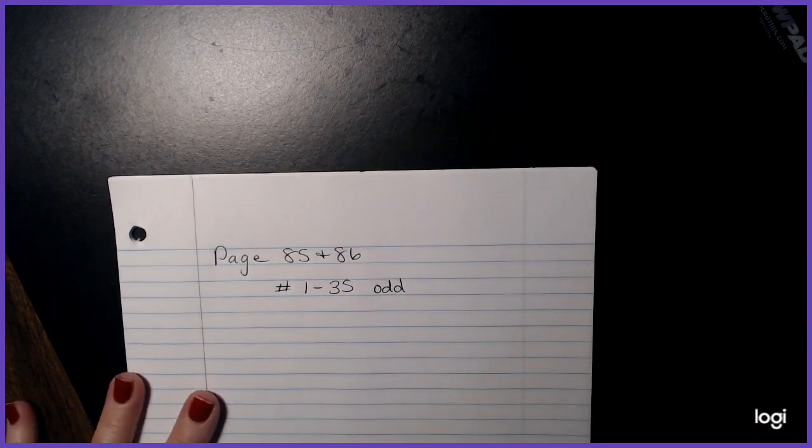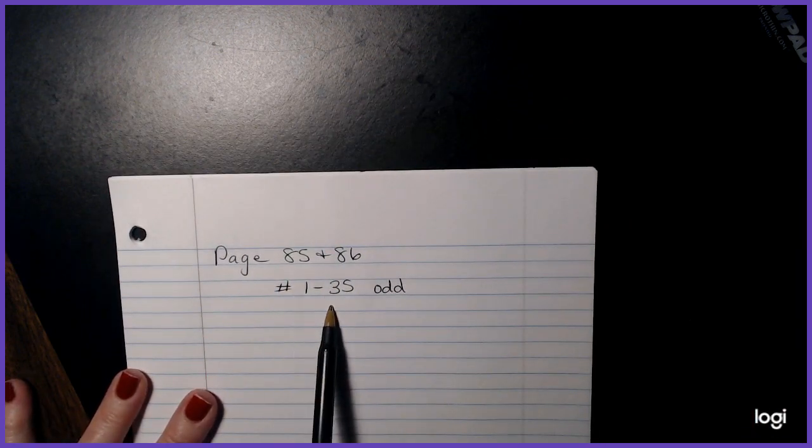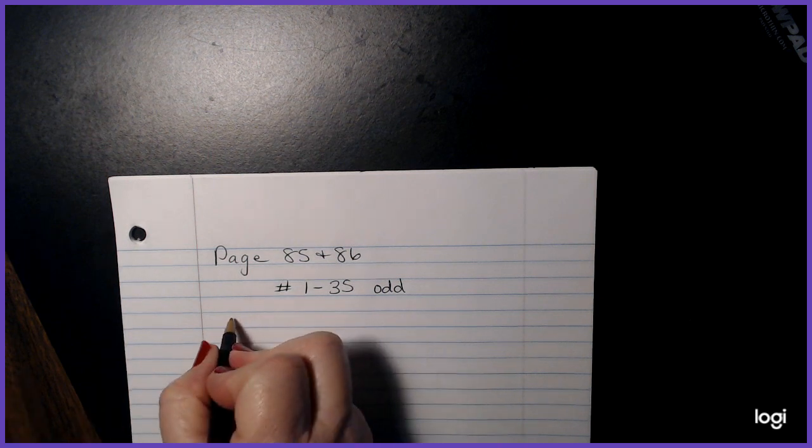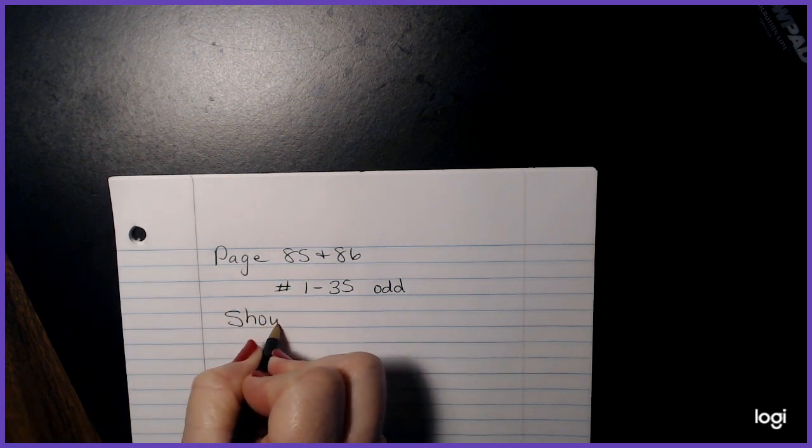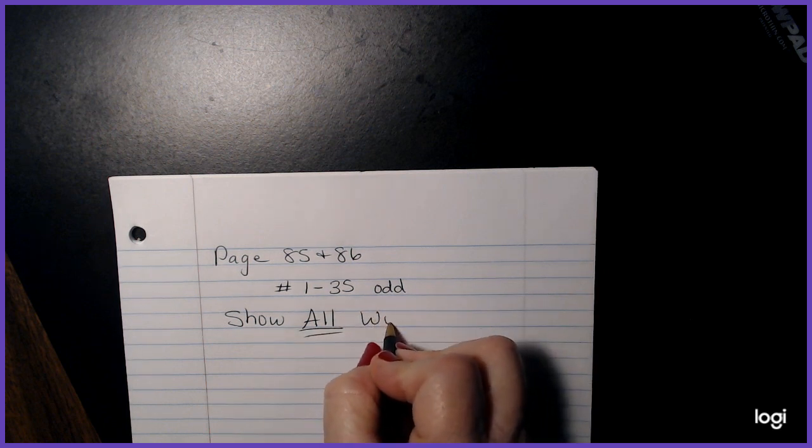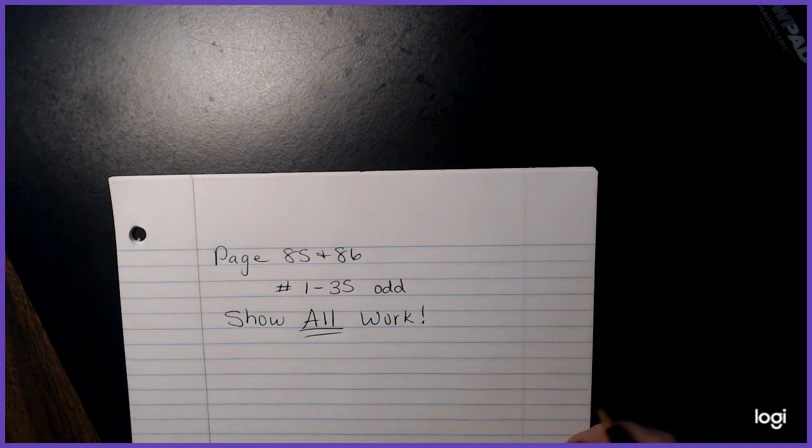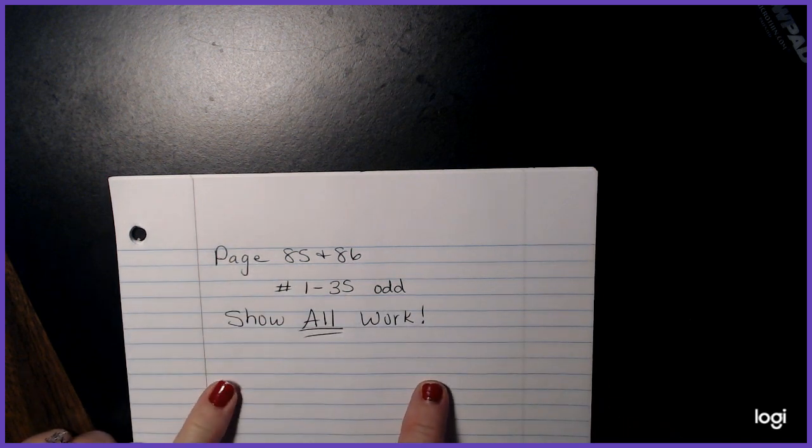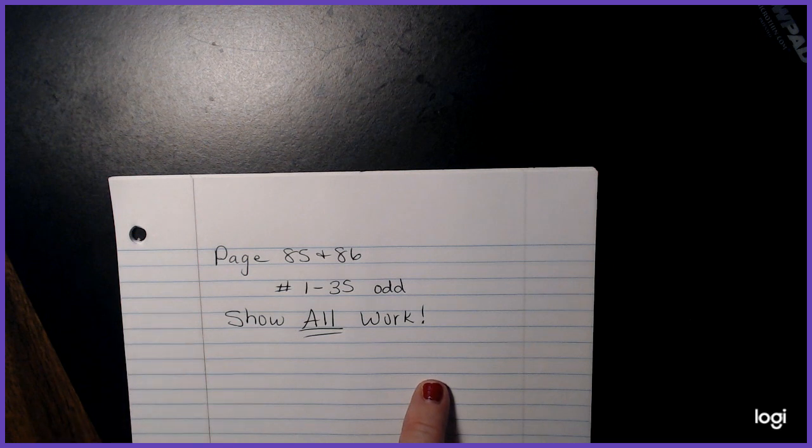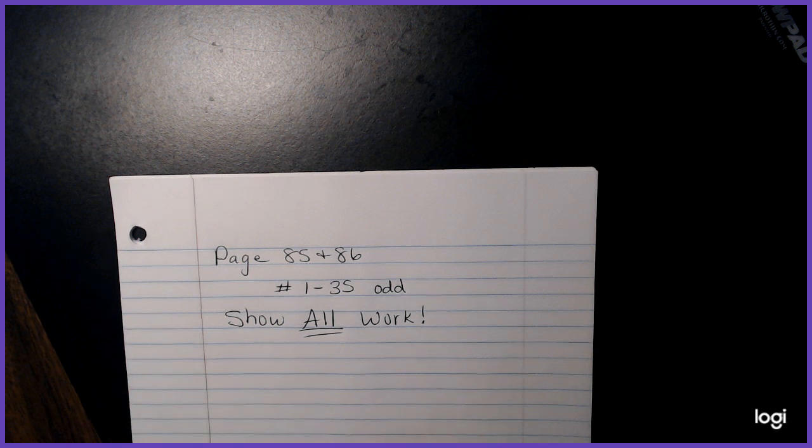So let's look at what our final assignment is. Here's our math assignment. We're going to look at page 85 and 86. You are doing the numbers one to 35 odd, and you have to show all work. You can go ahead and pause your video and turn it off. If you want me to go back and explain some of the problems to you, you can rewind the video a little bit. Otherwise you can start working on your math assignment.